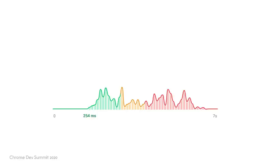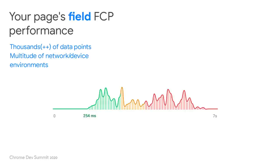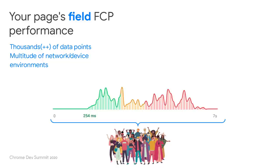Because this is field data, it is recorded from real users on their real devices. Every time one of your users loads your page, it adds a single data point to this set. Because of this, a single field metric represents all of your users — thousands of data points, variable cache conditions, network and device environments. Real-world data presents you with all sorts of variables and unknowns. When you're trying to optimize based on data that represents so many different conditions, it's difficult to know where to start.